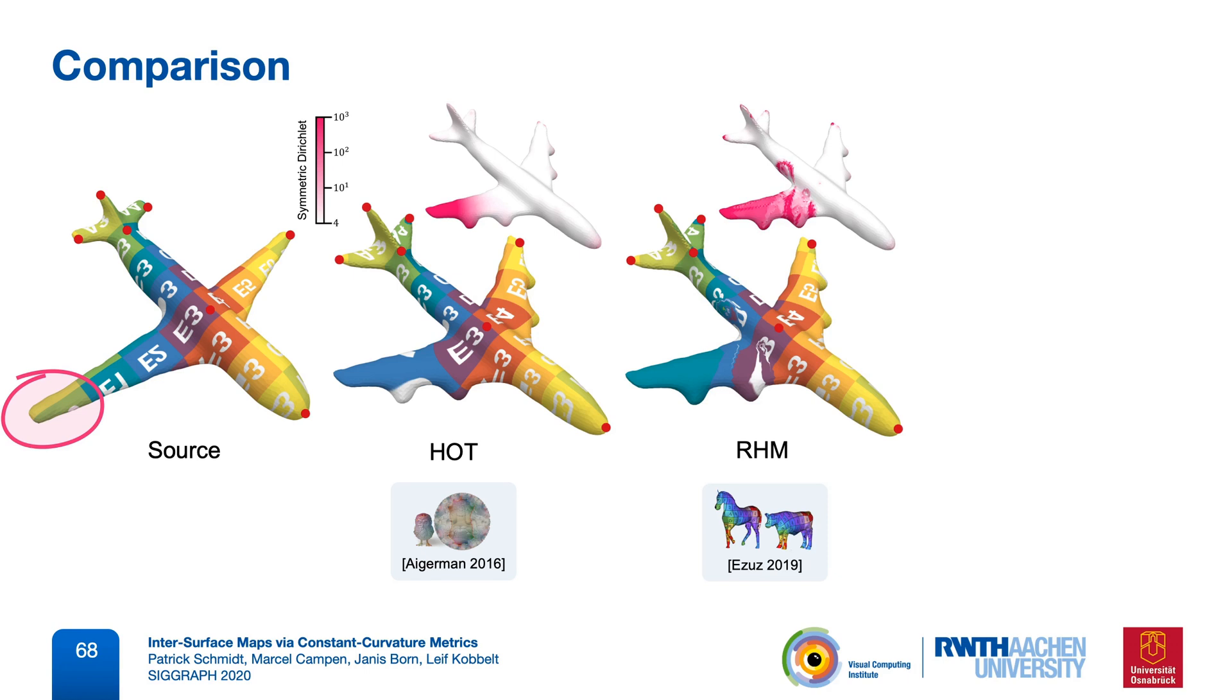RHM optimizes distortion, but works extrinsically, so that it cannot guarantee a bijective map when projecting to the surface. When RHM is not nicely constrained, as in this case, it can sometimes happen that it doesn't find a good optimum, causing severe distortion.